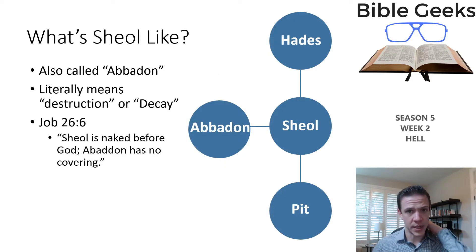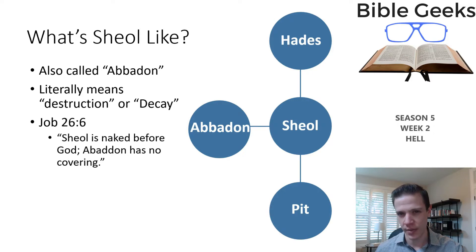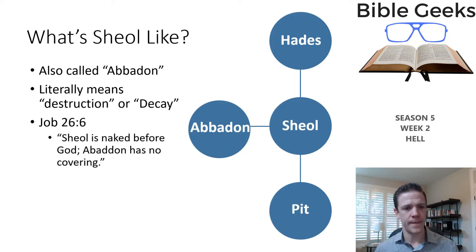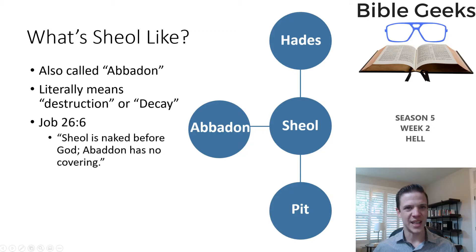It was also called Abaddon — we saw that in Psalm 88 just a moment ago — which literally means destruction or decay. That's an interesting concept: thermodynamics and entropy appear to be applying in Sheol. Job 26 is where you can see the relationship between Abaddon and Sheol in parallelism: 'Sheol is naked before God. Abaddon has no covering.' We see them equated there. This destruction or decay idea is related to Sheol.